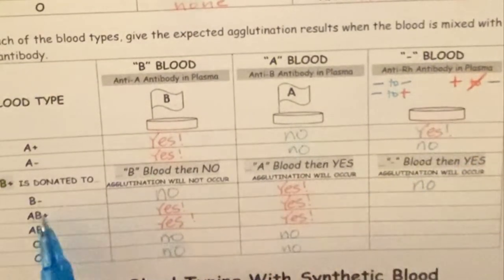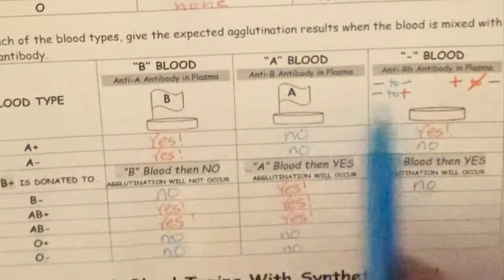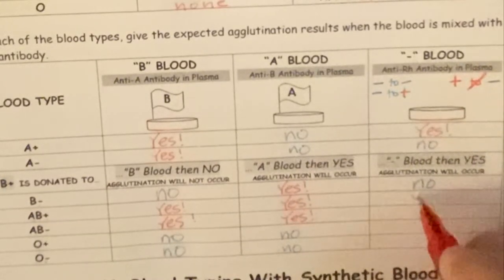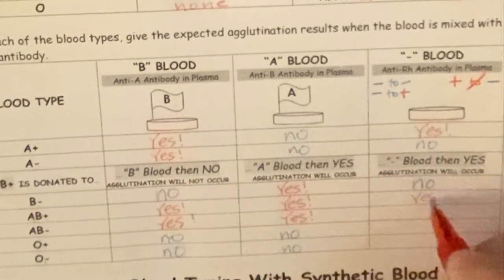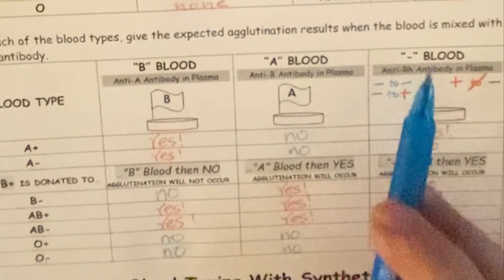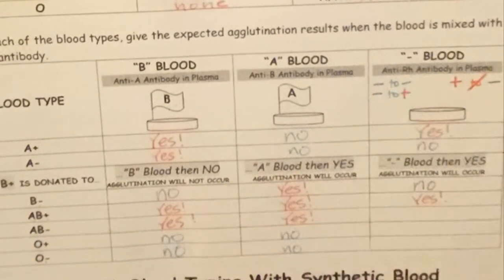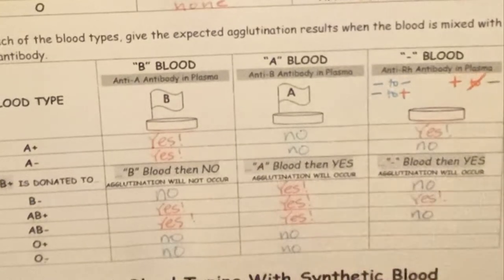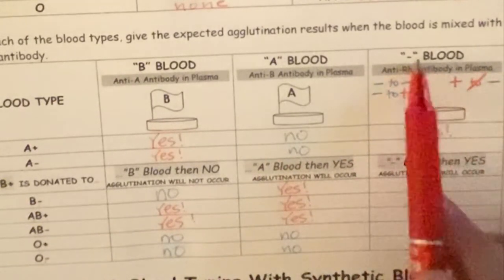What you should be noticing is that there is a pattern here — yes, no, yes, no, all the way down — because negatives can go into negatives with no agglutination, and positives going into negatives will cause agglutination because of the anti-RH antibody. Go ahead and fill in the rest of the chart.